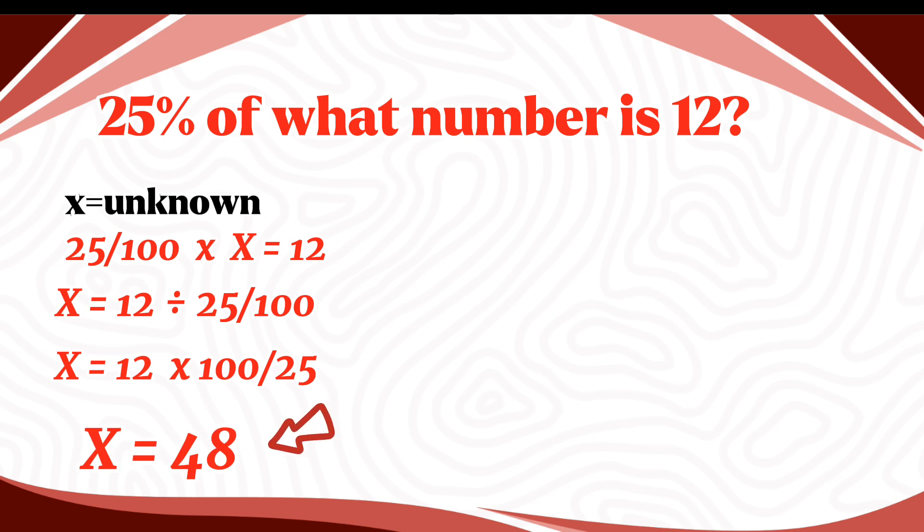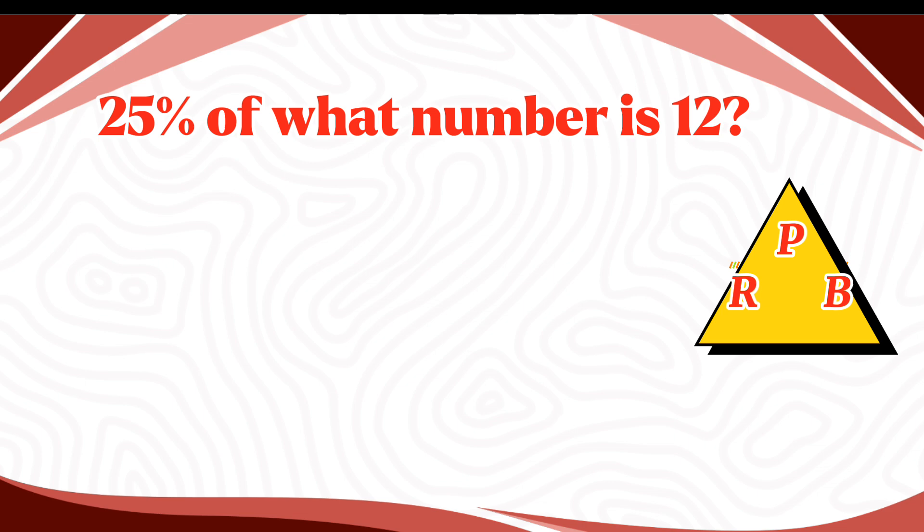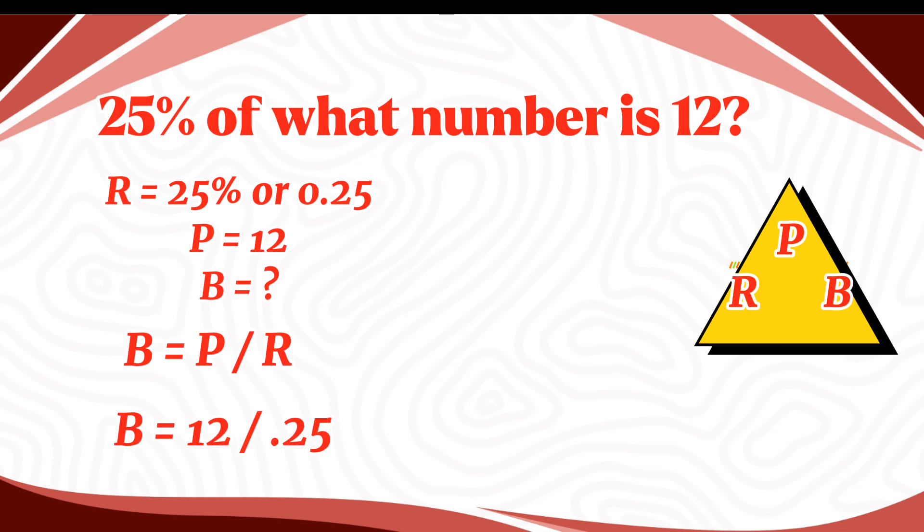The second method is using the PRB or the Magic Triangle Formula. 25% here is our rate. 12 is our percentage. And the unknown here is our base, since the keyword is 'of,' which is after that word is the base. Since our unknown here is the base, let's have this formula: Base is equal to percentage over rate, or B is equal to P over R. Let's substitute the given on our formula. So B is equal to 12 divided by 25%, or 12 over 0.25.